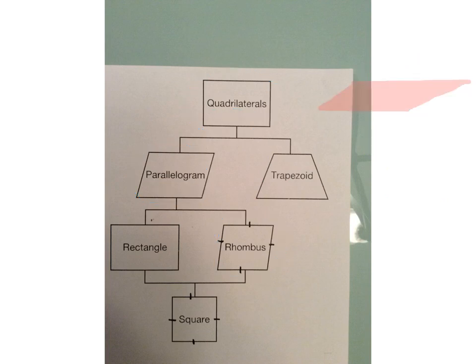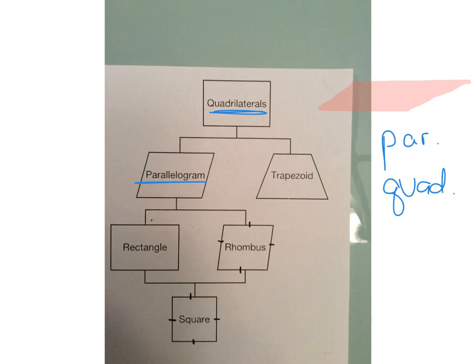Now let's look at this shape. This is a parallelogram, and it is also a quadrilateral because it falls underneath the quadrilateral on the family tree. The best name is parallelogram, but it's also a quadrilateral.